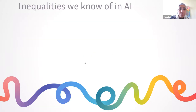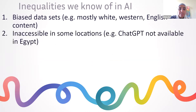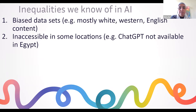Some inequalities that are very clear: biased data sets — the majority of content AI has been fed is mostly white, Western, English content. It's also inaccessible in some locations. ChatGPT is technically not available in Egypt, and not available in Saudi Arabia for some reason. So to access ChatGPT there, people need to use a VPN and pretend to be in another country.